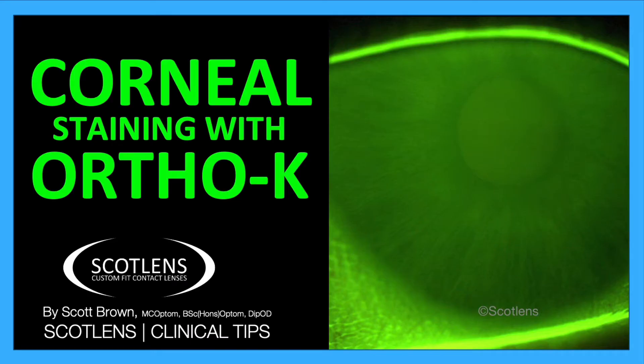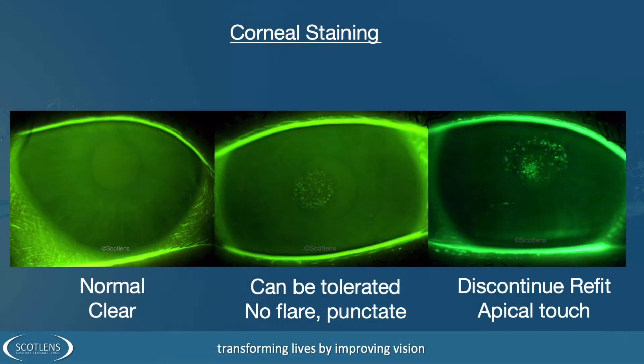Let's talk about corneal staining with OrthoK. Usually with OrthoK we don't see any degree of corneal staining. You're going to see a cornea like the image on the left hand side where there's no staining and good ocular surface quality.